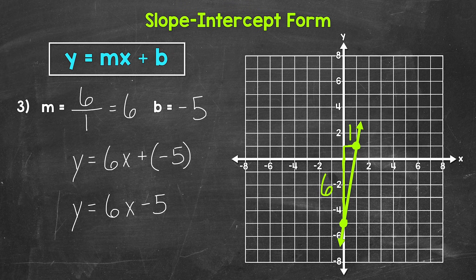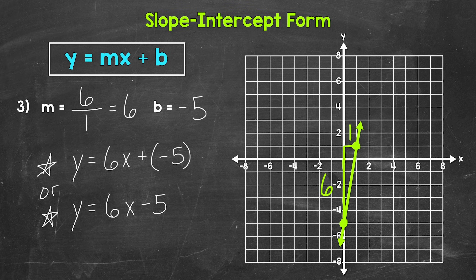A lot of times we will see slope-intercept form simplified to show a negative y-intercept as subtraction. So this is something to be aware of — we have the equation where we are adding negative five, or we can simplify and rewrite it as subtraction. Just something to keep in mind when we have negative y-intercepts.